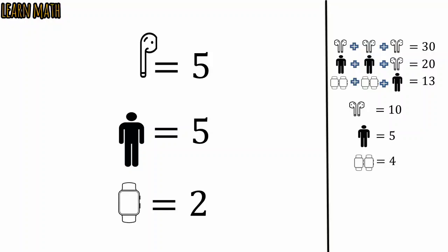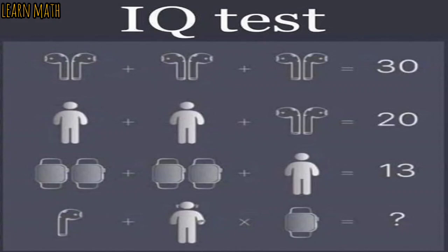Now we will put these values in the fourth equation. But what is the fourth equation? Look at the picture again. The man in the fourth equation put the ear parts and wear the watch.